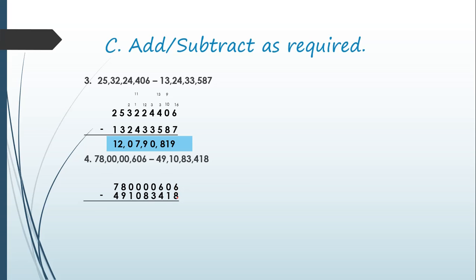In the ones place we have 6 and 8. Six is smaller and 8 is larger, so we need to borrow from the next place. But the next place has a 0, so we can't borrow. We move to the hundreds place. If we borrow from hundreds, this 6 becomes 5 and this 0 becomes 10. Borrowing from 10, it becomes 9 and 6 becomes 16. 16 minus 8 gives 8, 9 minus 1 gives 8, and 5 minus 4 gives 1.